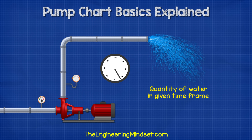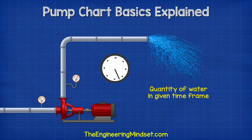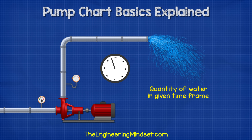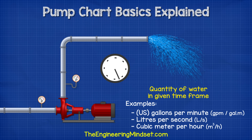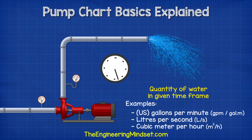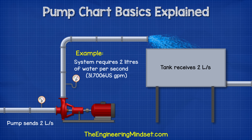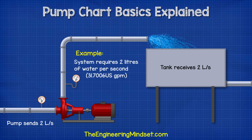The flow rate is a measurement of how much liquid is flowing from the pump in a given amount of time. This measurement comes in many different units — for example, gallons per minute, litres per second or cubic metres per hour. For example, a system might be designed to move 2 litres of water per second from a holding tank to a process tank.